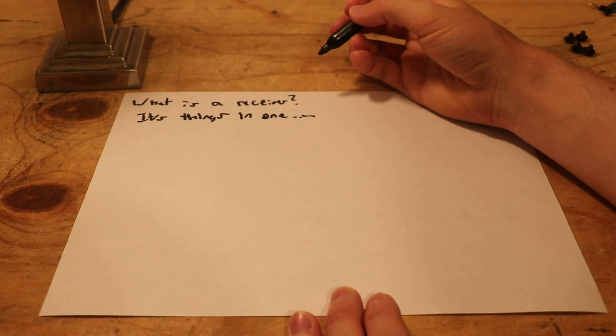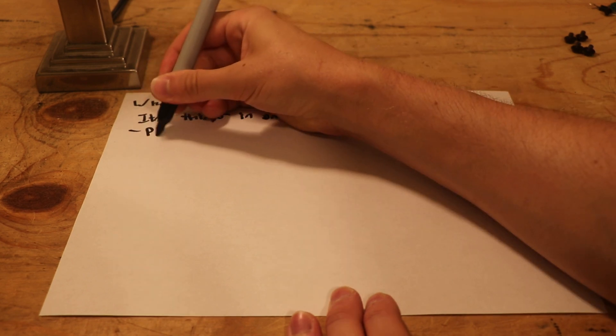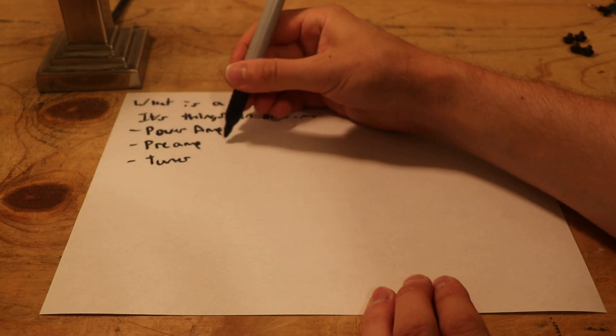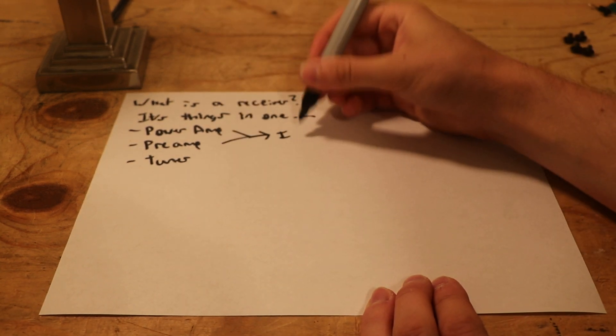A receiver is three things in one. It is a power amp, a preamp, and a tuner. Likewise, if you just take these two things, it is an integrated amp.